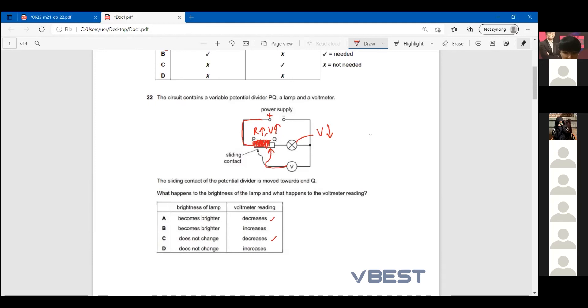Because the voltage decreases, the possible answer is does not change or decrease - C. If the lamp becomes brighter, you must move to P.